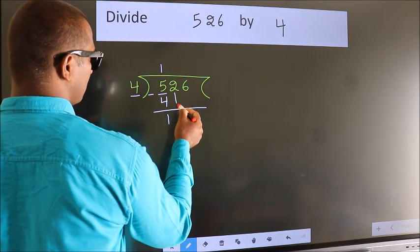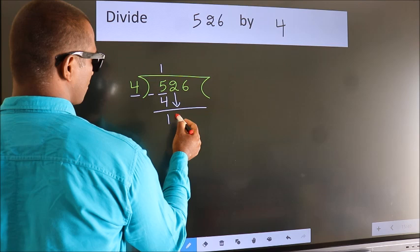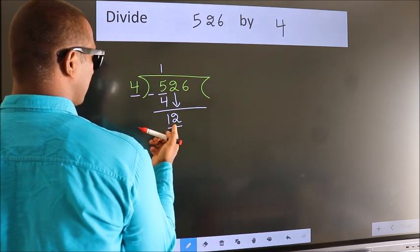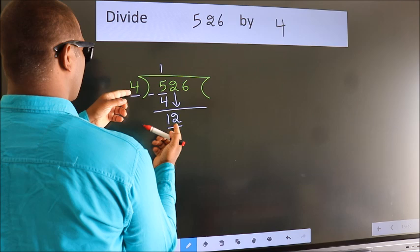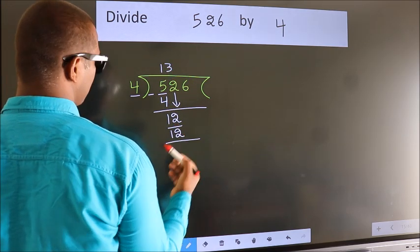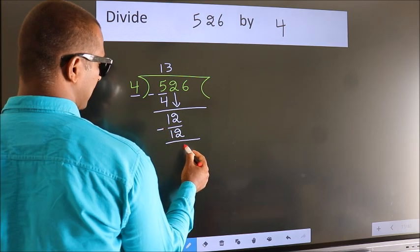After this, bring down the beside number. So, 2 down. So, 12. When do we get 12 in the 4 table? 4 threes is 12. Now, we subtract. We get 0.